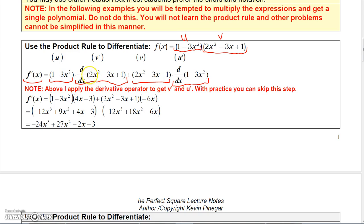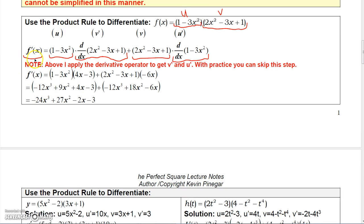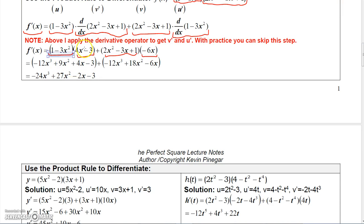I advise writing out this step for the first couple of examples. The first polynomial (1 − 3x²) is multiplied by the derivative of the second, which is (4x − 3). Then the second polynomial (2x² − 3x + 1) is multiplied by the derivative of the first, which is −6x. After FOILing and distributing −6x, I got −12x³ + 9x² + 4x − 3, and −12x³ + 18x² − 6x.